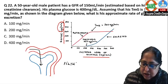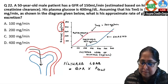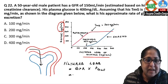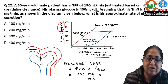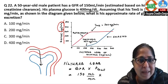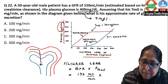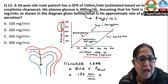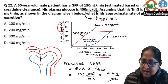GFR has been given as 150 ml per minute. Plasma glucose is 400 mg per 100 ml, which is 4 mg per ml. Multiplying: 150 ml/min × 4 mg/ml — the ml units cancel — giving a filtered load of glucose of 600 mg per minute.